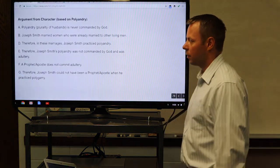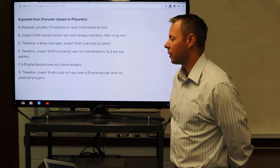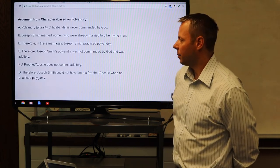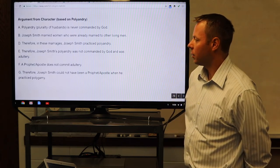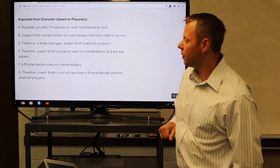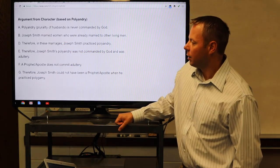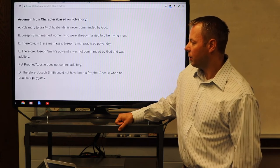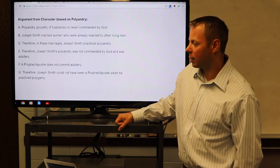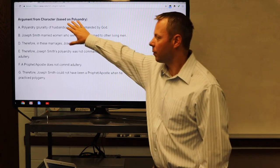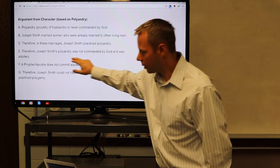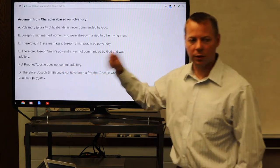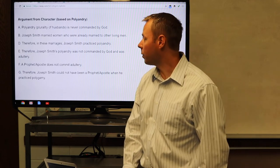There's a related argument from character based on polyandry. Here's how this argument goes. Premise A: Polyandry, which is the practice of plurality of husbands, is never commanded by God. B: Joseph Smith married women who were already married to other living men. Therefore, in these marriages, Joseph Smith practiced polyandry. Therefore, Joseph Smith's polyandry was not commanded by God and was adultery. A prophet or apostle does not commit adultery. Therefore, Joseph Smith could not have been a prophet or apostle when he practiced polygamy. This is actually an argument from character that's based on polyandry.